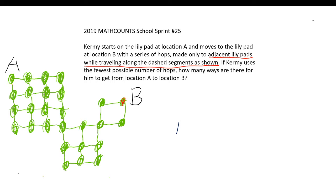While traveling along the dashed segments as shown, we're only moving along the lines. We can't go from, like, if A is over here and we have another point over here, we can't go like this. We can only move along the line, so we can go this, this, this, this. But then we have some more things that we need to worry about. If Kermit uses the fewest possible number of hops, how many ways are there for him to get from location A to location B?